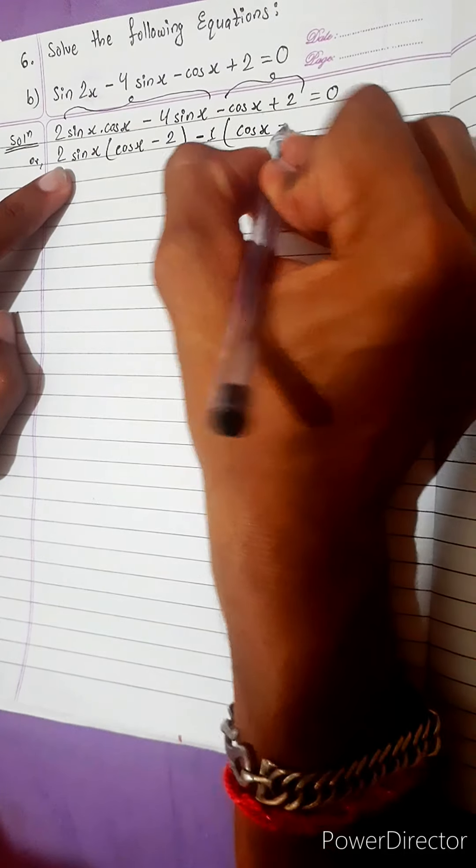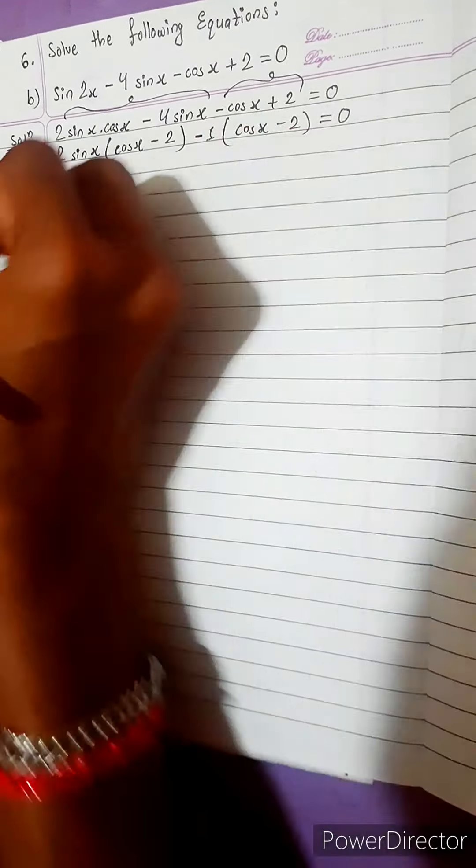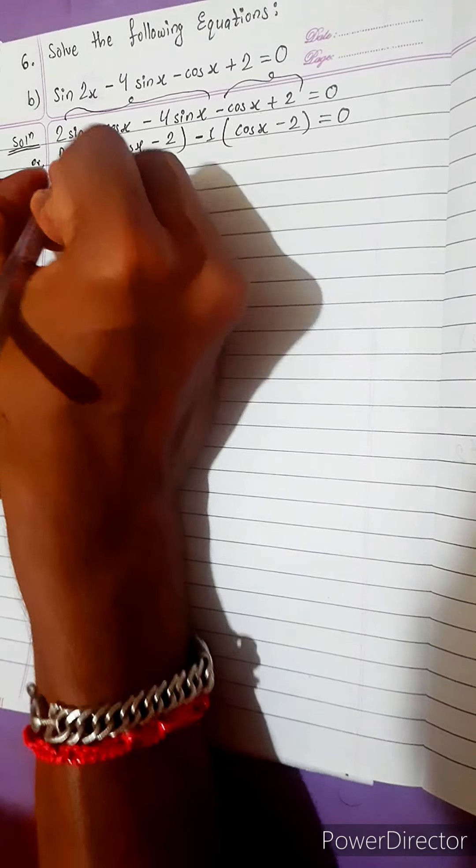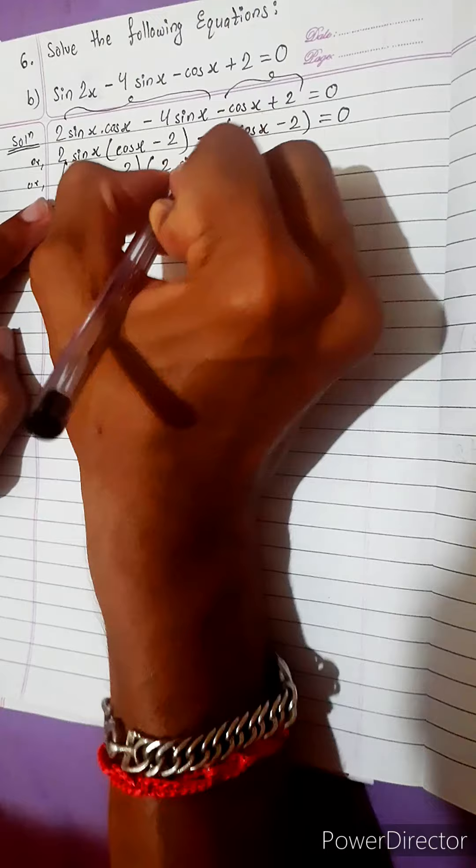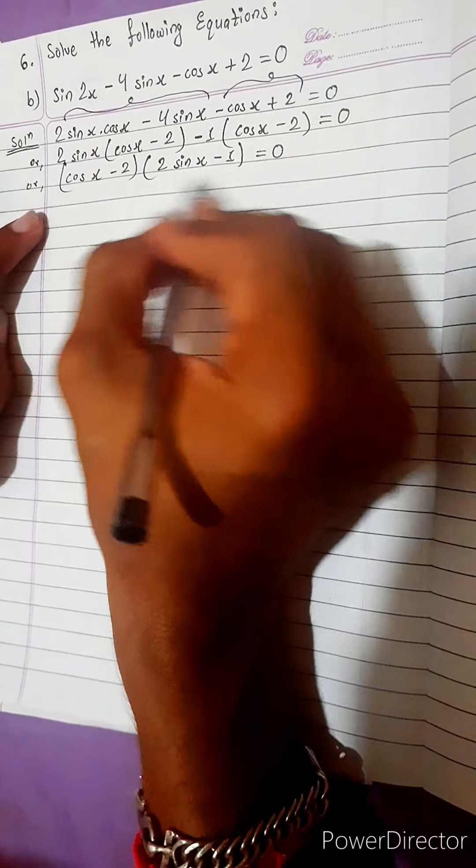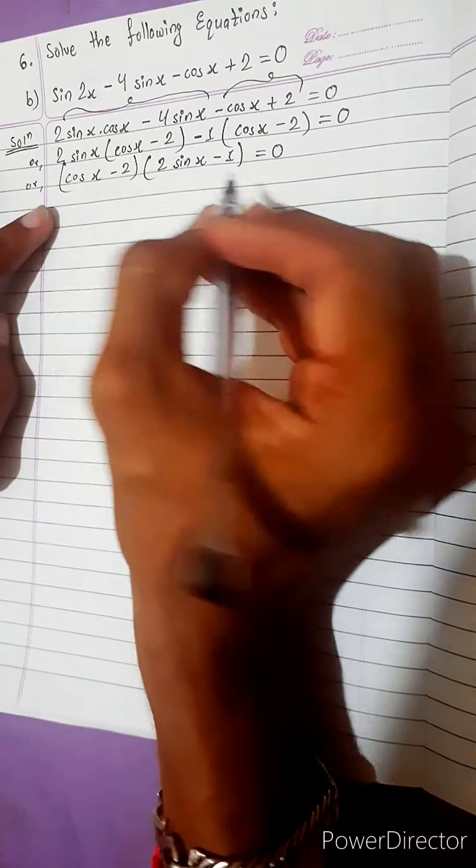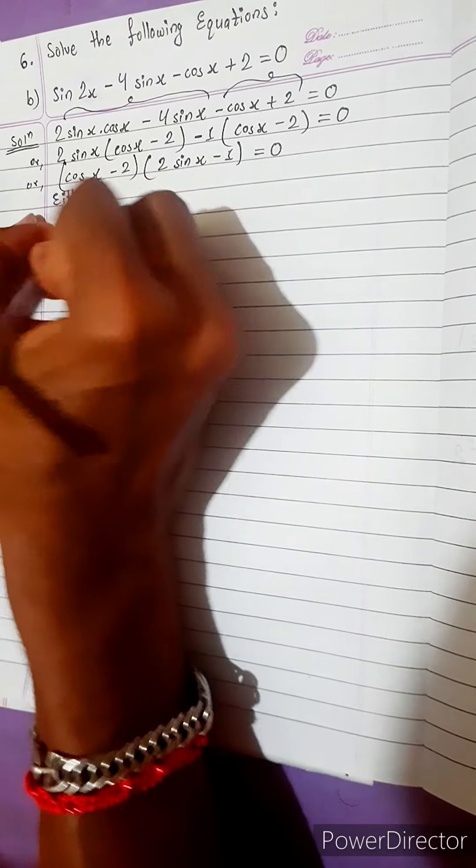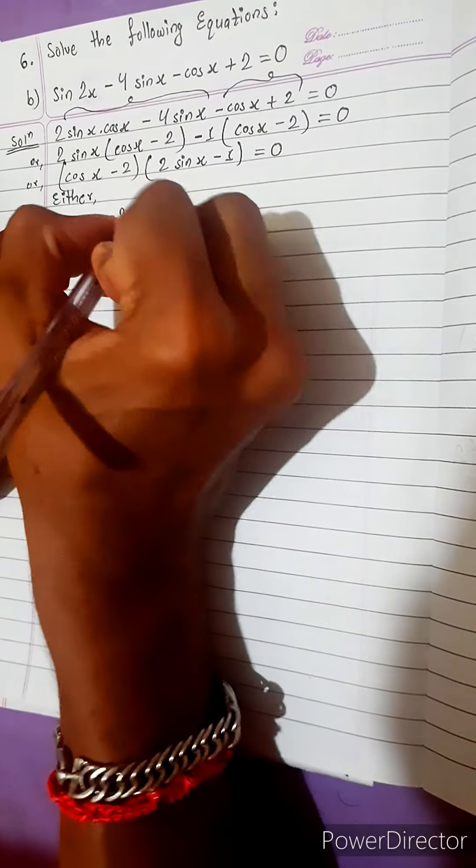Sine x already taken. Out of 4, 2 is remaining. Again take minus 1 common from here. We will get cos x and minus 2. Isn't it? Yes. Now we got the solution. We cannot do anything, so let's do either or.